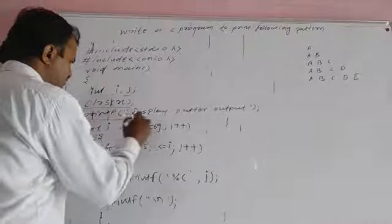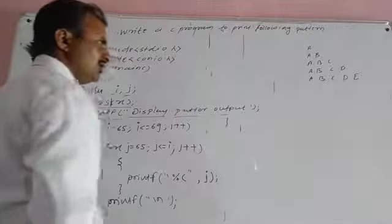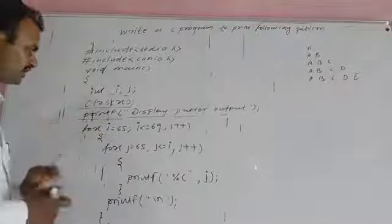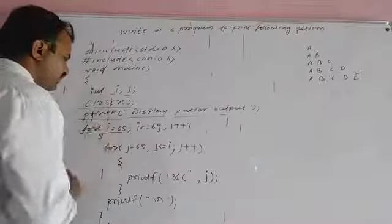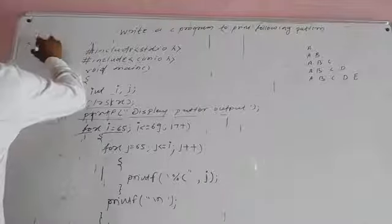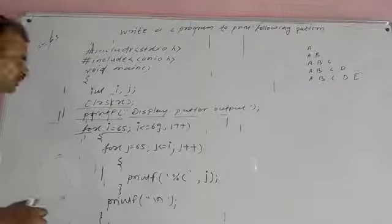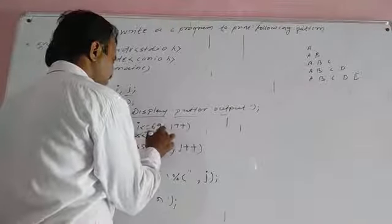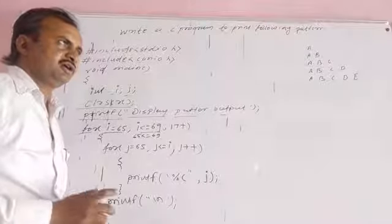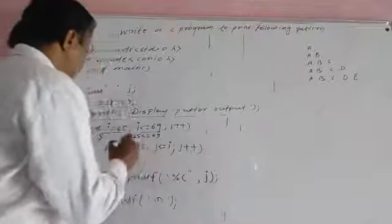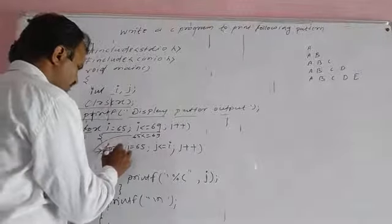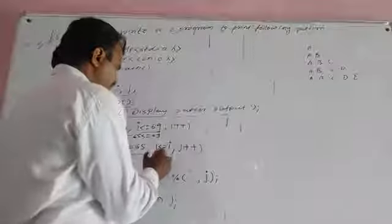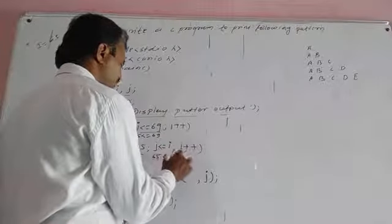We use printf to display the pattern output. First we initialize the value. J is equal to 65. If you look at j, its value is 65. Both i and j start at 65.